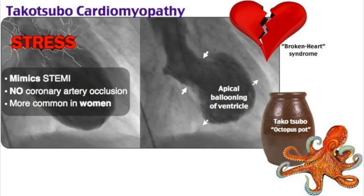Takotsubo (stress) cardiomyopathy is a transient regional systolic dysfunction of the left ventricle that can imitate myocardial infarction, but is associated with an absence of significant obstructive coronary artery disease or evidence of plaque rupture. Risk factors include post-menopausal women exposed to physical or emotional stress, such as death of a loved one, catastrophic medical diagnosis, or acute medical illness.